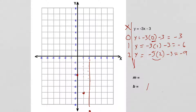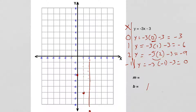Let's erase that and get one more point. What if I used x = -1? y = -3 × (-1) - 3. Negative 3 times negative 1 is positive 3, and 3 - 3 is 0. So if x = -1, which is right over here, the y is 0. My point goes right there.